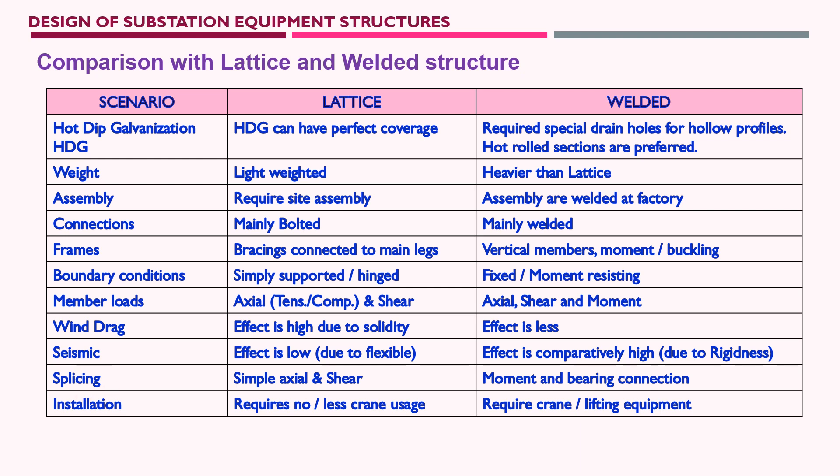For splicing connections in lattice structures, only simple axial and shear connections are required. In welded structures, moment and bearing connections are needed. Installation is easier for lattice because it requires less or no crane usage — structural parts are small and can be bolted at site. Welded structures require cranes or lifting equipment at site because the entire assembly is completed at the factory before galvanization, making lifting and placing on foundations more complex.